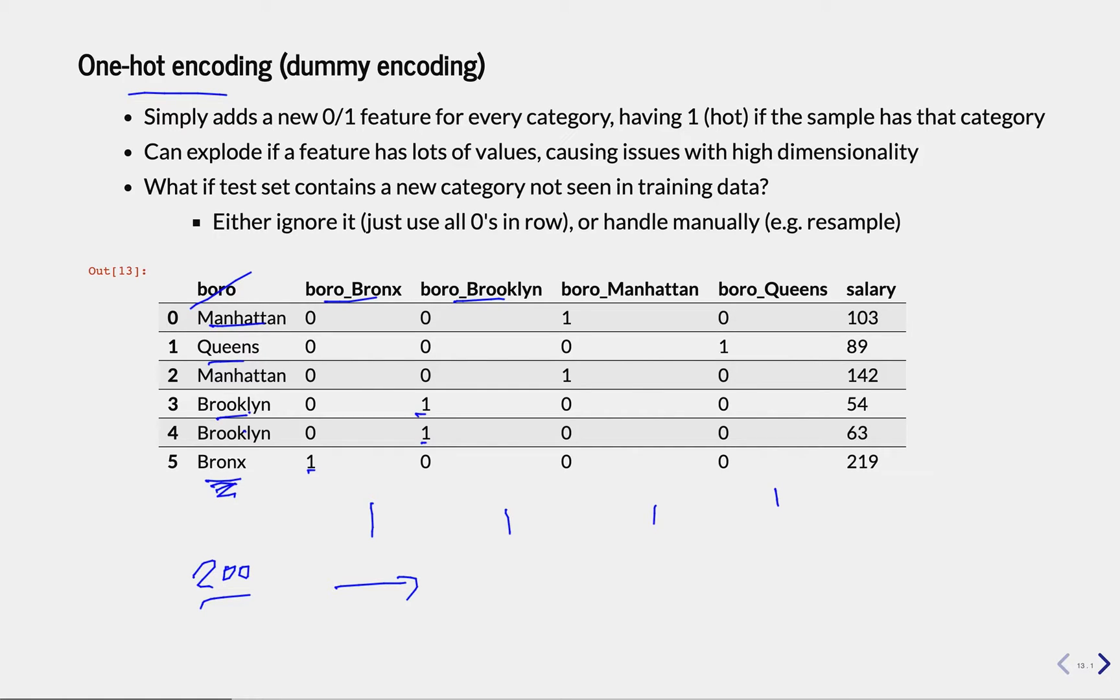Another problem that often occurs is that you have these features in the training set, but then in the test set, maybe you have Staten Island as another borough.